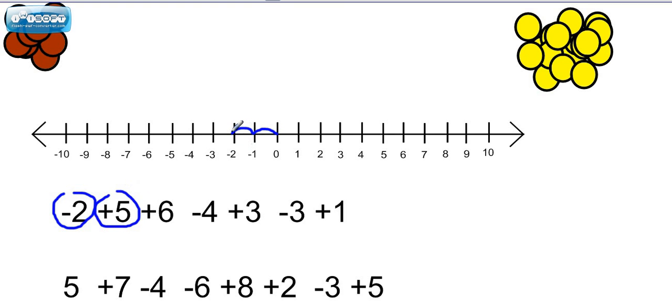Now let's complete this. We're going to go to the right five from where we left off. One, two, three, four, five. Right now we're at a three. Now we're going to go forward or to the right six. One, two, three, four, five, six.